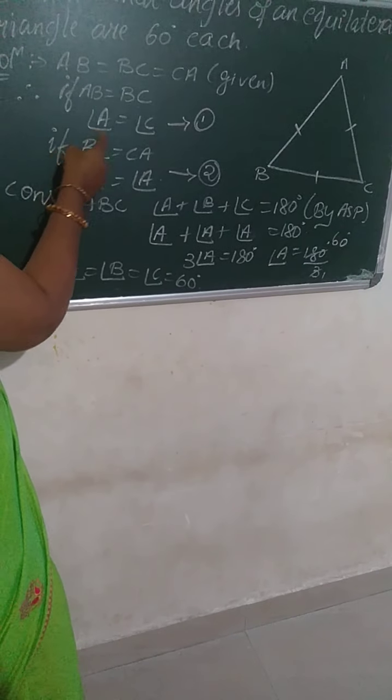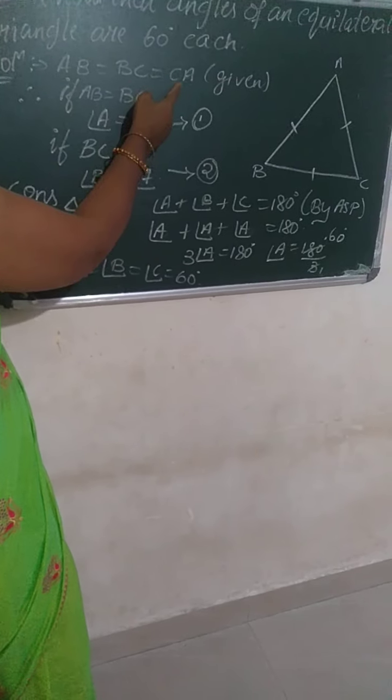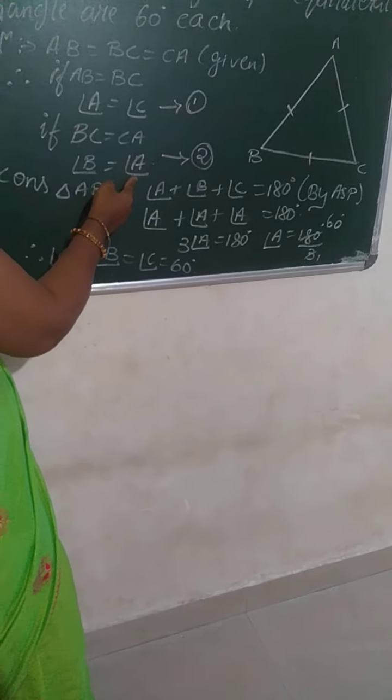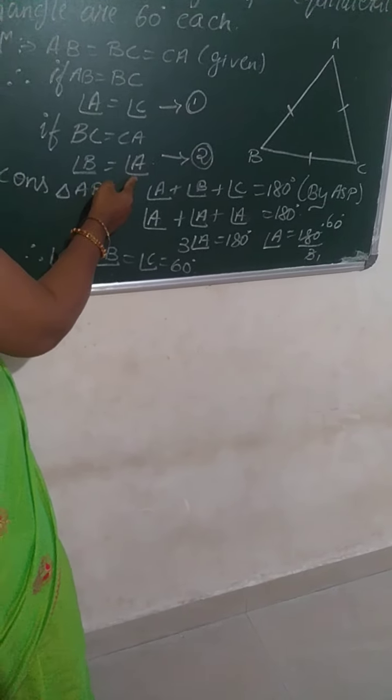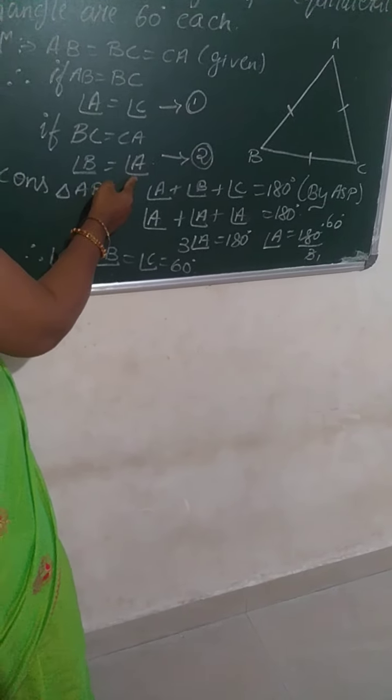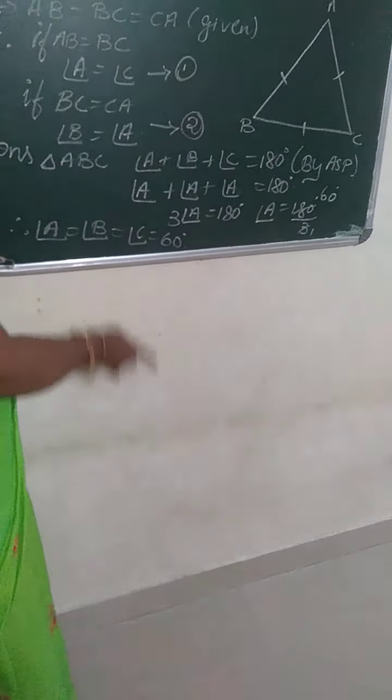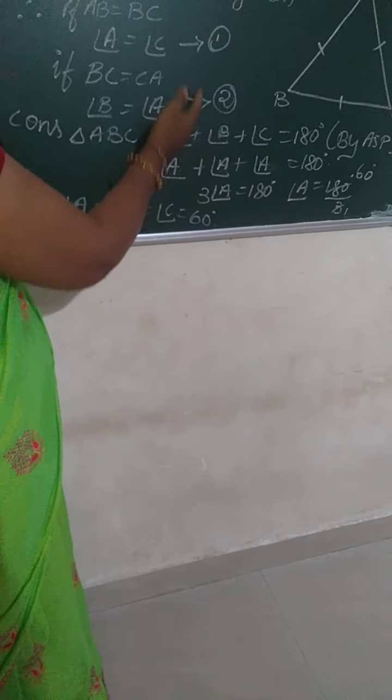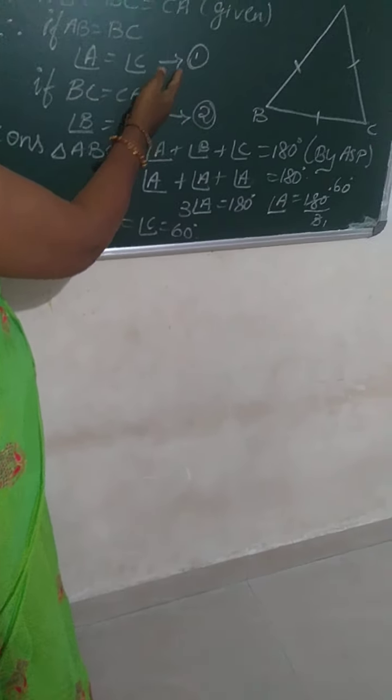Similarly, AB equals BC equals CA, that means all three sides are equal. Coming to the first part, AB equals BC. B and B are same, so angle A equals angle C. Now coming to the second part, BC equals CA. C and C, so angle B equals angle A. By ASP, I am going to take angle A plus angle B plus angle C equals 180.